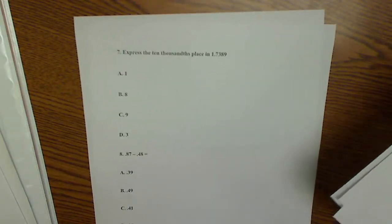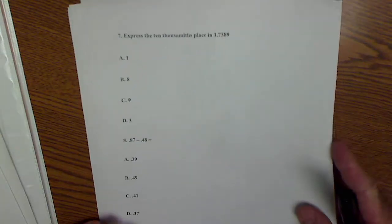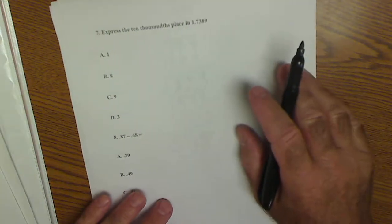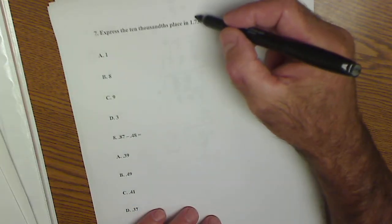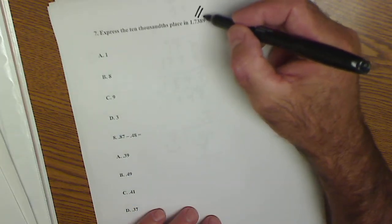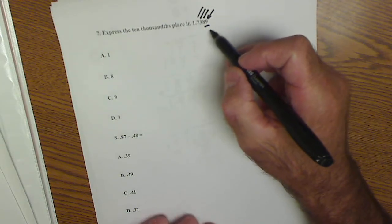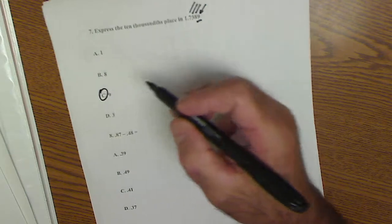I'm on number 7. So this is the ten thousandths place. This is tenths, hundredths, thousandths, ten thousandths. So the 9 is in the ten thousandths place. Answer C.